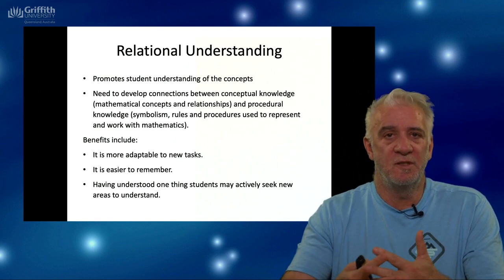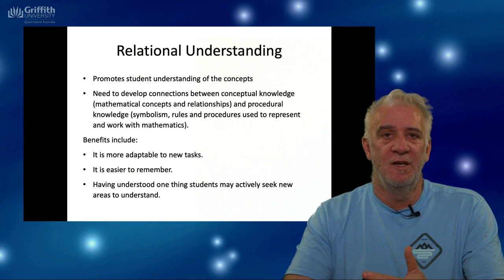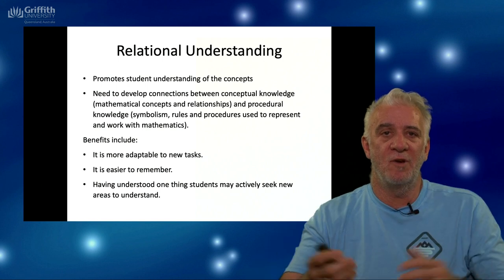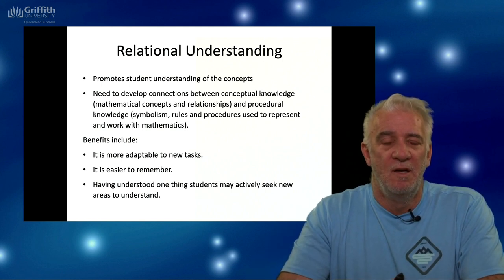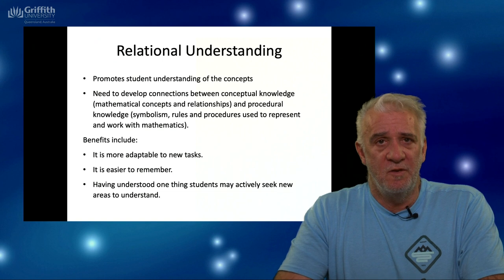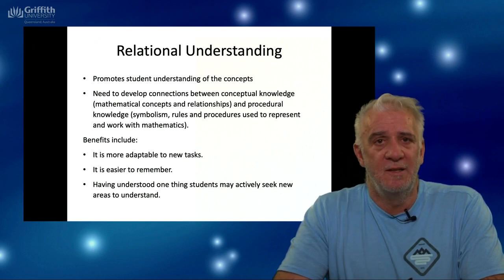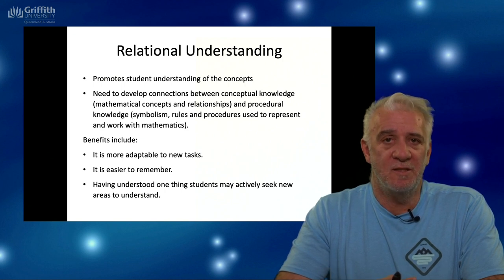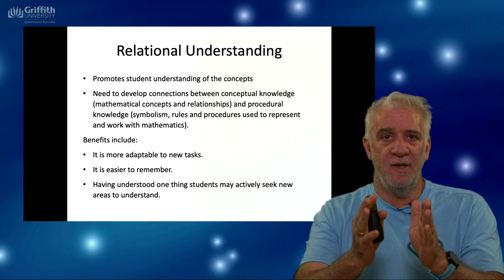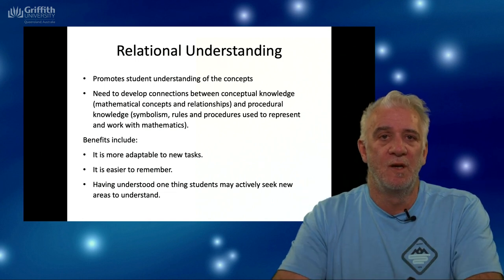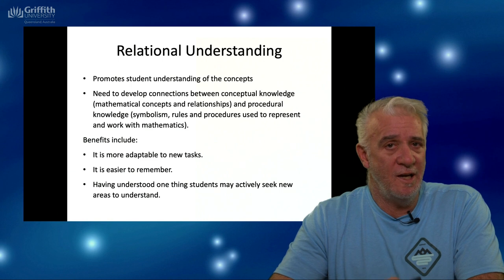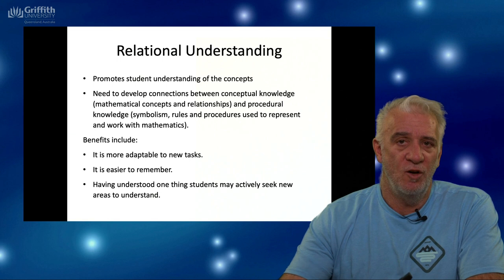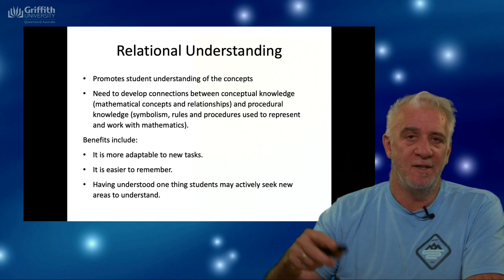Relational understanding is more complex and more consistent with what mathematics is like. It's not just knowing something — it's also being able to do something and work around with things and understand how those things are related to other parts of mathematics. If you learn maths in this relational sort of way, then it's more adaptable to new tasks. You can apply it in other places because it's not just a specific narrow thing — it's much broader. Usually it's easier to remember because it's more connected, and having understood one thing often helps you seek to know and understand other things.